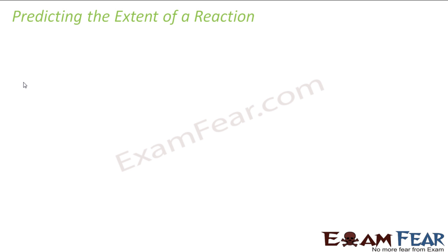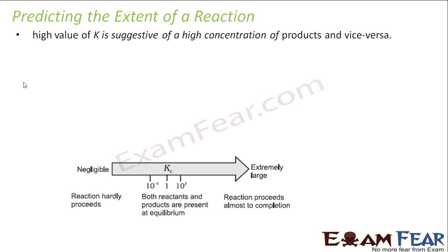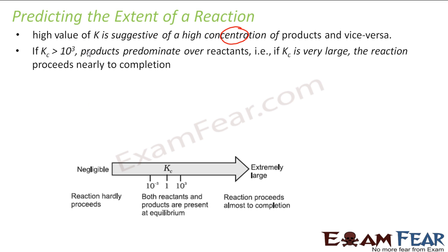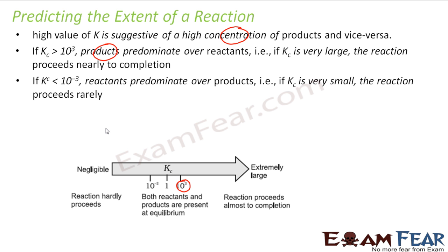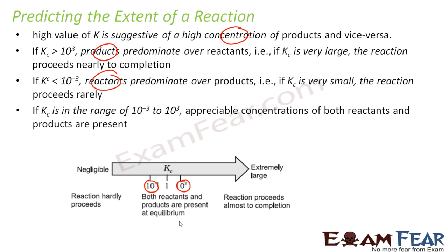To predict the extent of the reaction: a high value of Kc implies a high concentration of products compared to reactants. If Kc is greater than 10³, we say that products predominate — most of the reaction has gone to the product side. If Kc is less than 10⁻³, reactants predominate — very few reactants combined to form product. If Kc is in the range of 10⁻³ to 10³, both reactants and products are present in comparable amounts.